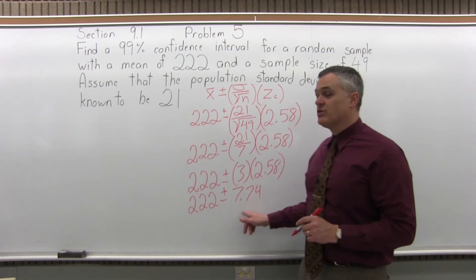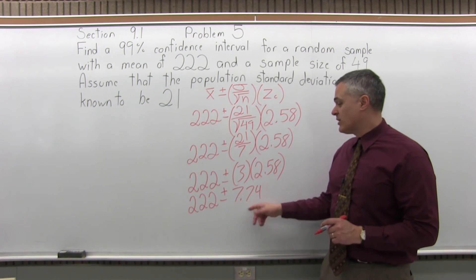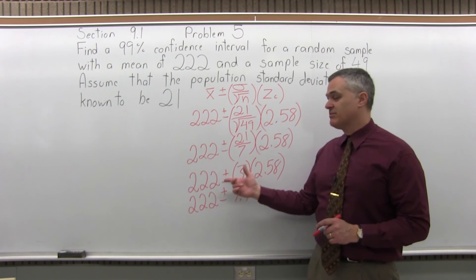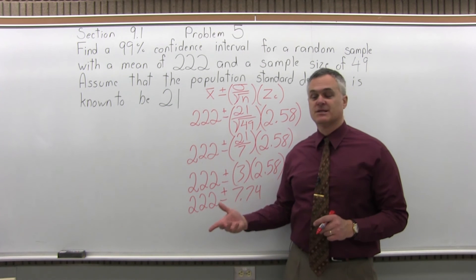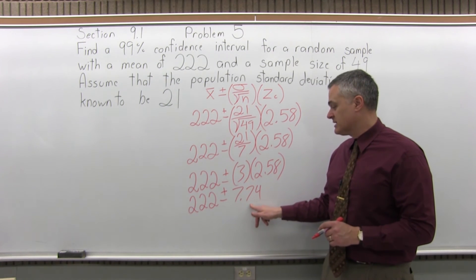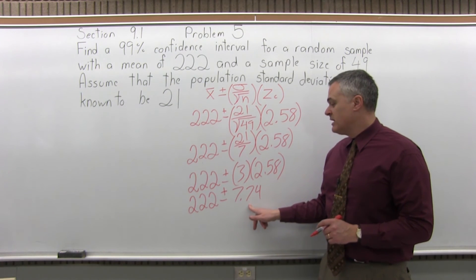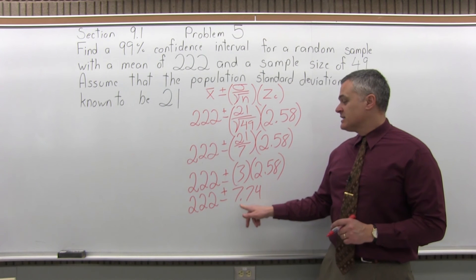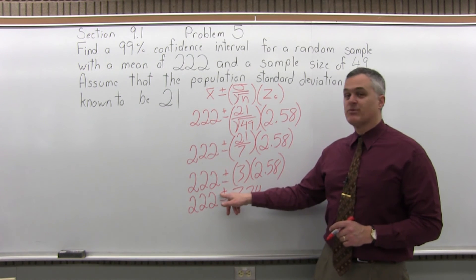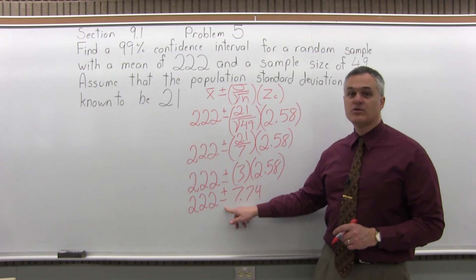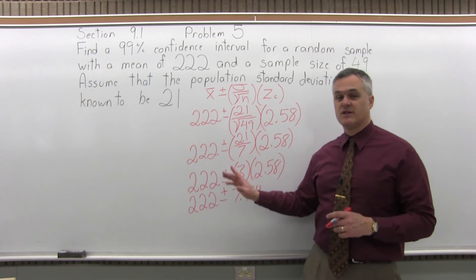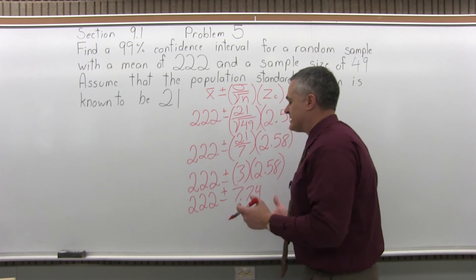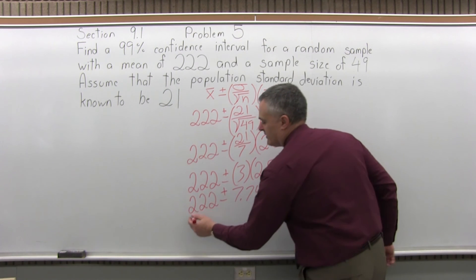And that's what you would call the margin of error. The margin of error is when you get one number after the plus and minus — that's the margin of error. For this problem it's 7.74. Now that I have that, I can split this into a separate minus and a separate plus. I like to do the minus first to give me the low end of the interval first.